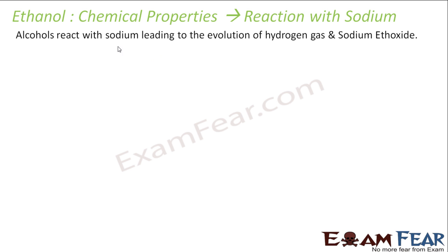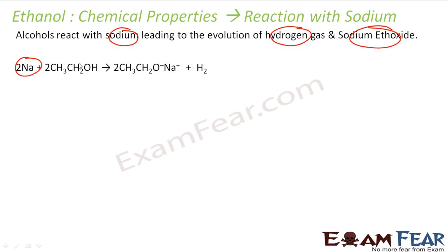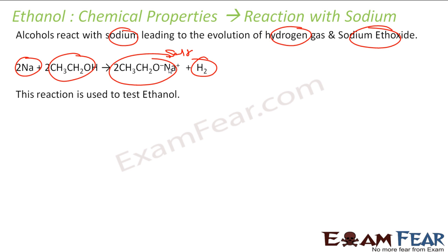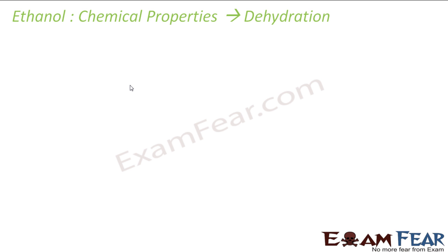The next reaction is the reaction with sodium. Alcohol reacts with sodium to give hydrogen gas and sodium ethoxide. You have sodium and ethanol — you react them and get sodium ethoxide (a salt) and hydrogen gas. This reaction is used to test ethanol: you add sodium to it, and if it gives effervescence with hydrogen gas, you can confirm it is ethanol.